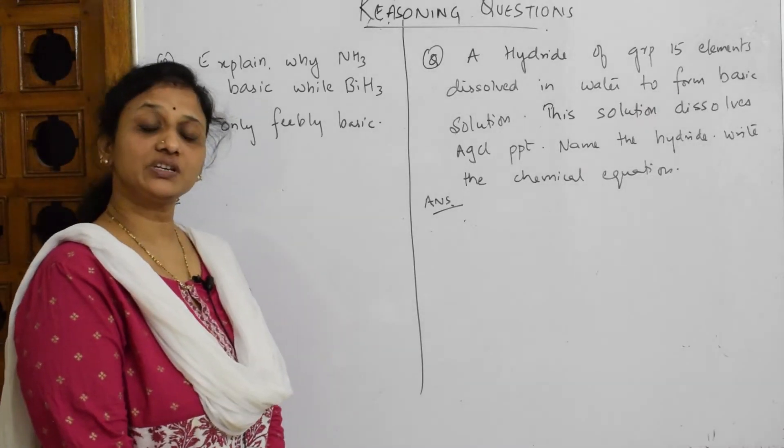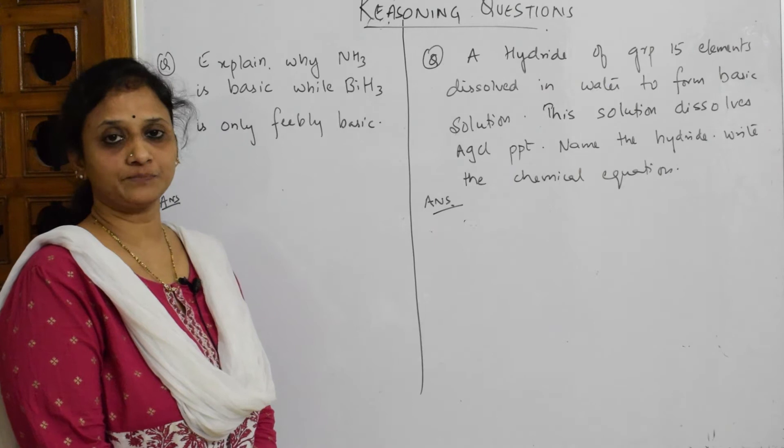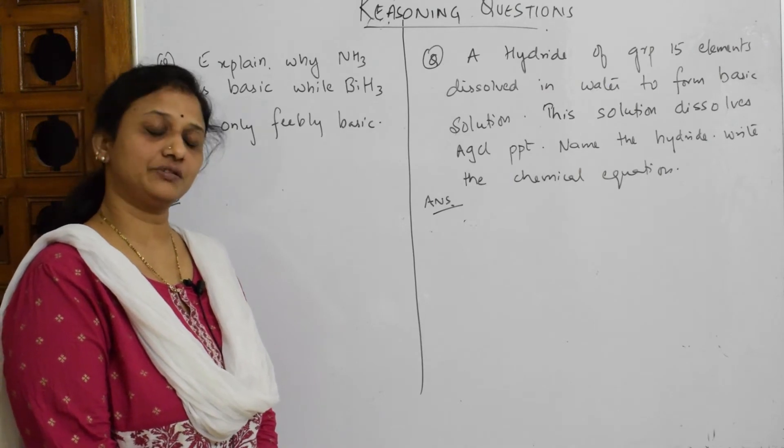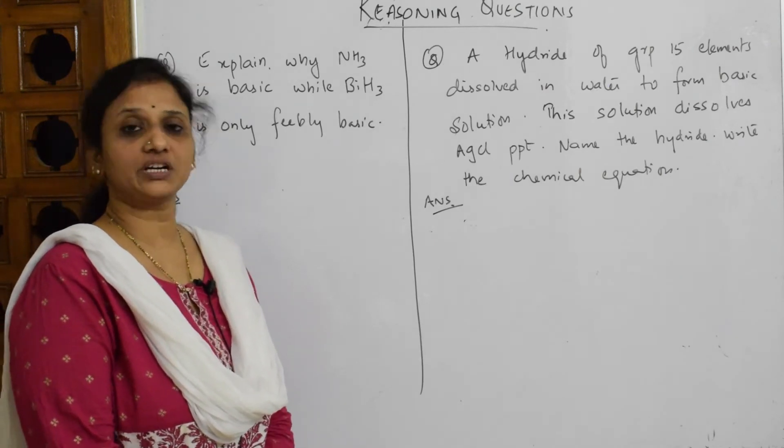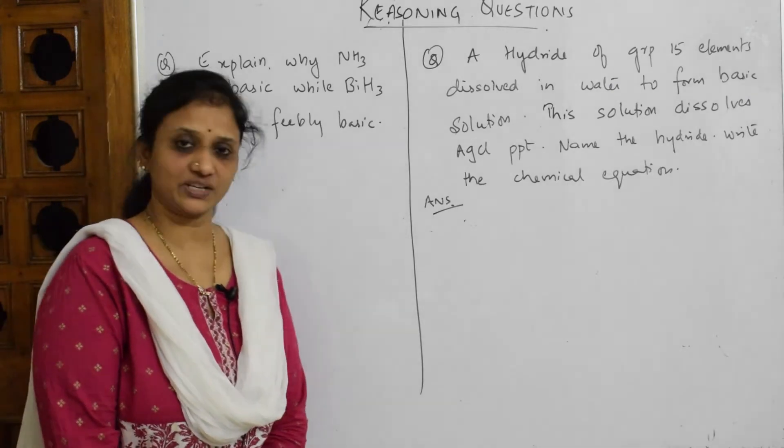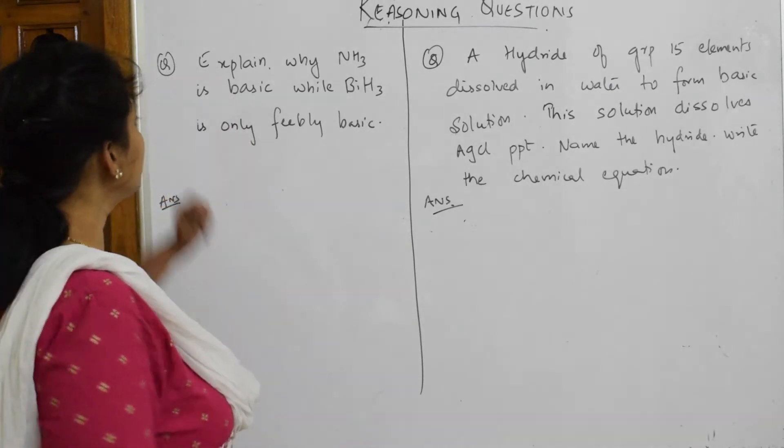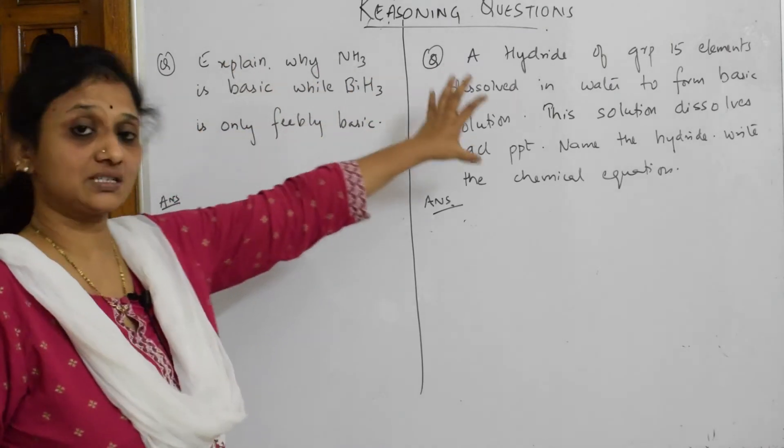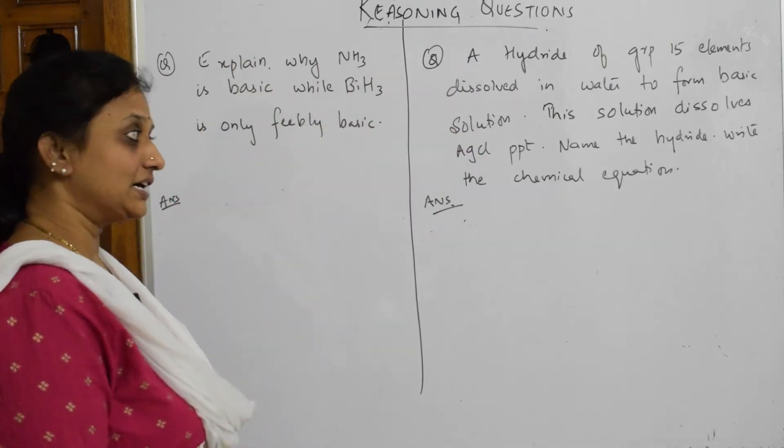Let's come back and start doing reasoning questions on ammonia. Different important varieties of reasoning questions are given. I'll be doing all those and then we'll go back to nitric acid. Whenever I have to do such questions, this is a paragraph-based question. Let us read the question carefully.